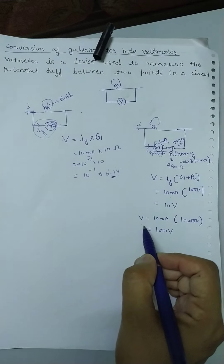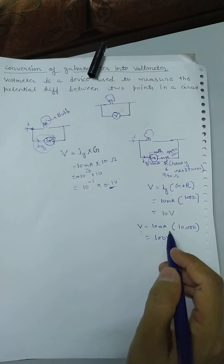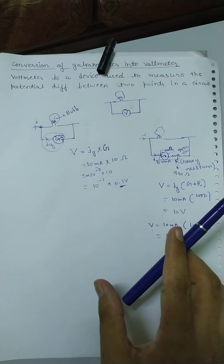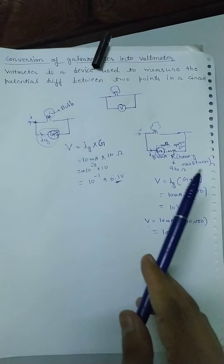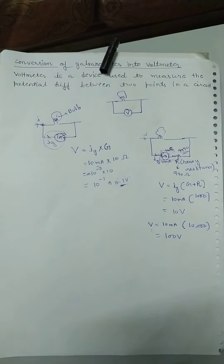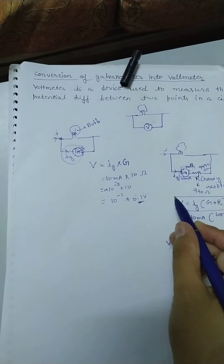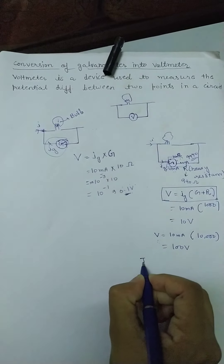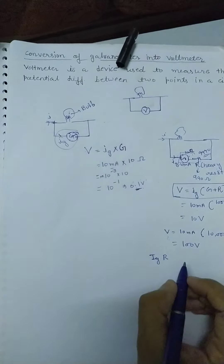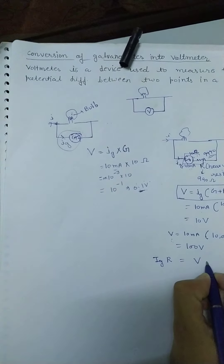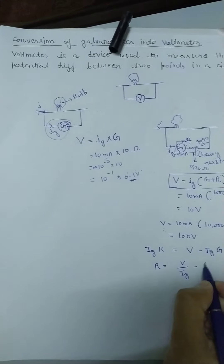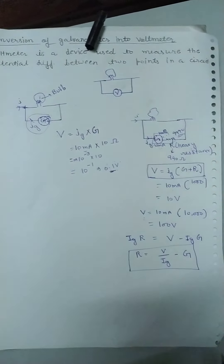So students, we can say that a galvanometer can be converted into a voltmeter by connecting a high resistance in series to the galvanometer. Agar galvanometer ke saath high resistance ko series mein connect kar den, to wo voltmeter mein convert ho jayega. Formula: V = IG × (G + R), therefore R = V/IG − G. In this way, you can find any value in a numerical problem.